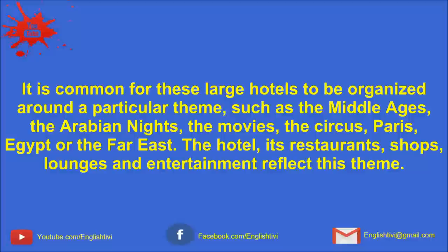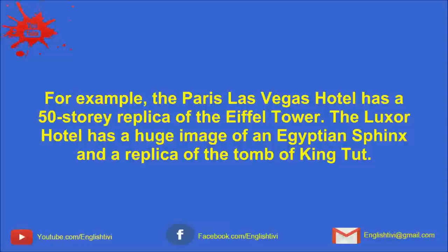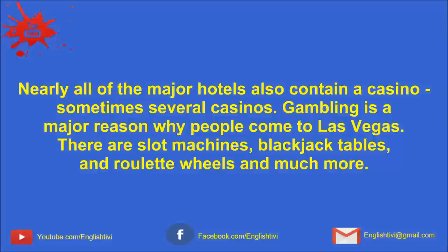The hotel, its restaurants, shops, lounges, and entertainment reflect this theme. For example, the Paris Las Vegas Hotel has a 50-story replica of the Eiffel Tower. The Luxor Hotel has a huge image of an Egyptian sphinx and a replica of the tomb of King Tut. Nearly all of the major hotels also contain a casino, sometimes several casinos. Gambling is a major reason why people come to Las Vegas. There are slot machines, blackjack tables, and roulette wheels, and much more. Even though Las Vegas is in the desert, there is an extravagant use of water. Large swimming pools, water slides, artificial waterfalls, and huge fountains are common.